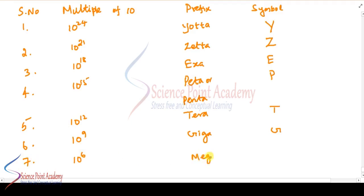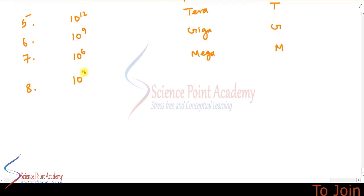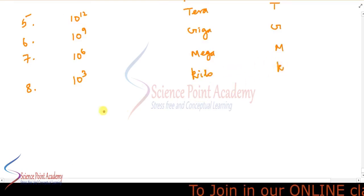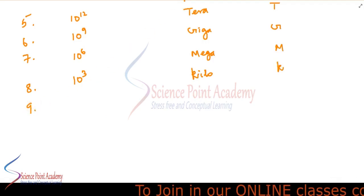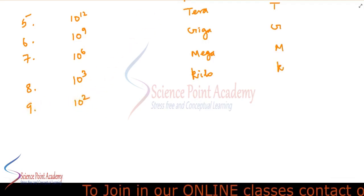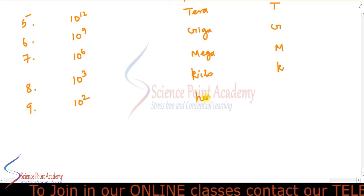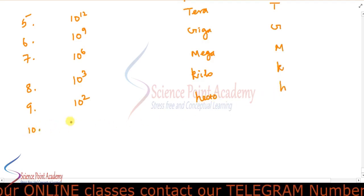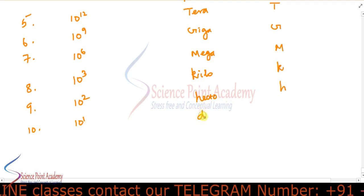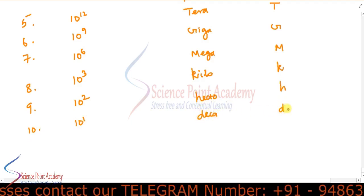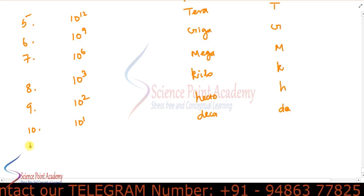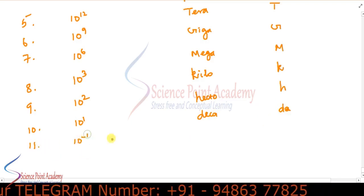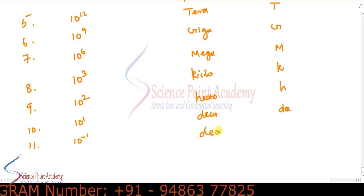10 power 6 is mega, symbol capital M. Then 10 power 3 is kilo, symbol small k. 10 power 2 is hecto, symbol H. 10 power 1 is deca, symbol Da. Then 10 power minus 1 — these are all small quantities — is deci, symbol small d.